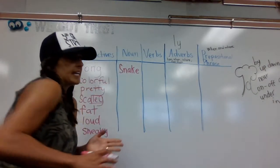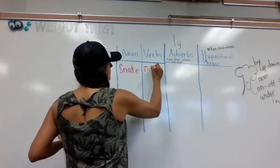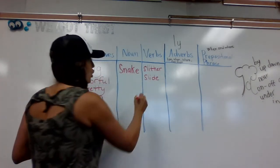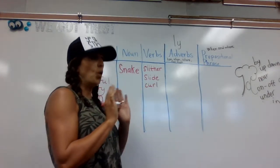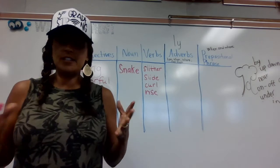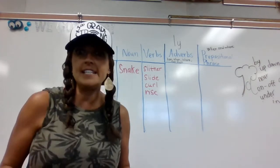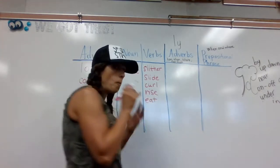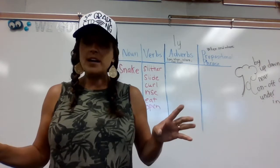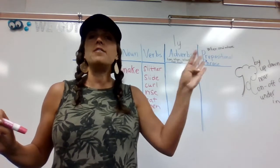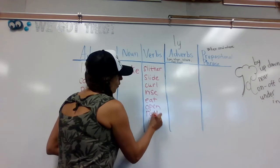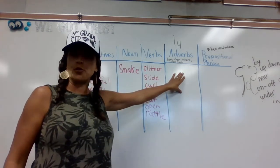Can you think of some things that a snake can do? It can slither, it can slide, it can curl up into a ball, it can rise up like a king cobra. A verb is something it can do — if you can do it, then it is a verb. Can it eat? Yes, a snake can eat and it can open its mouth really, really wide. And a rattlesnake can rattle — can you rattle? Then yes, it is a verb!